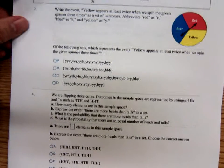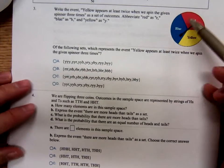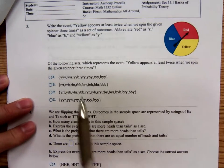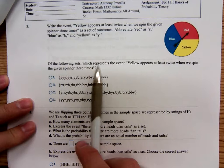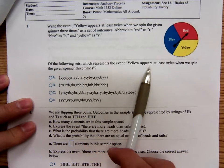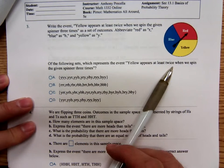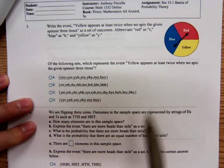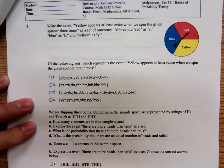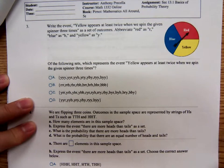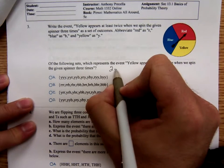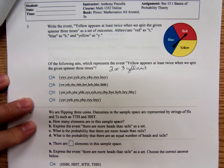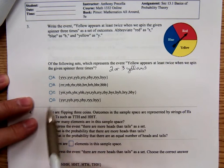Now, here's another one. Same setup. The spinner. Which set represents the event? Yellow appears at least twice when we spin the spinner three times? Yellow appears at least twice would be two or three yellows. Which one is two or three yellows?